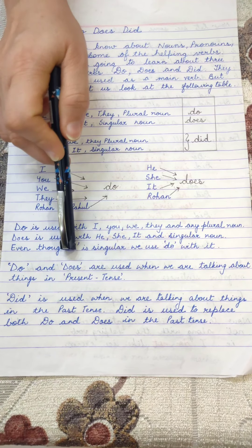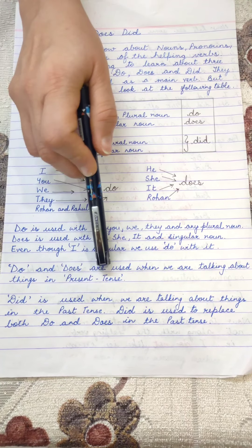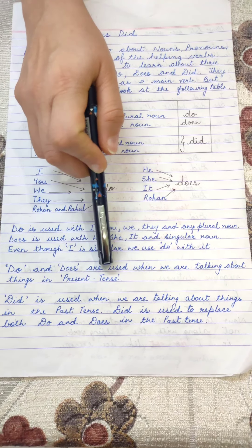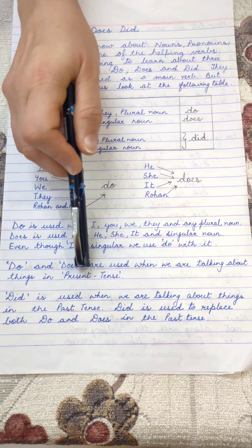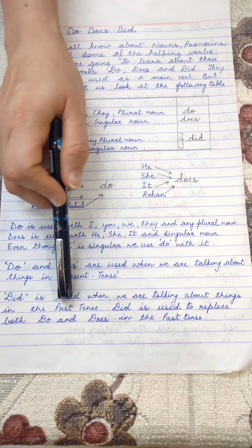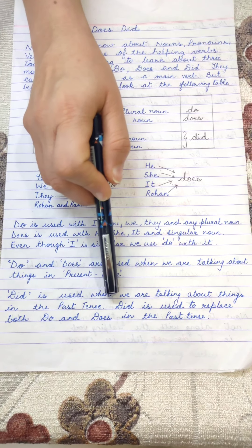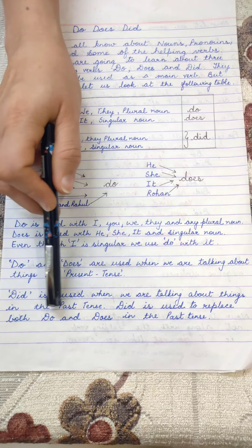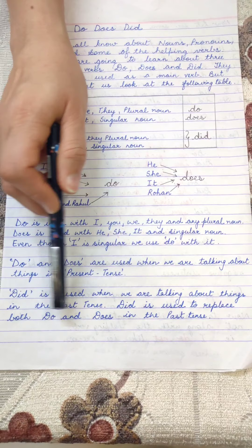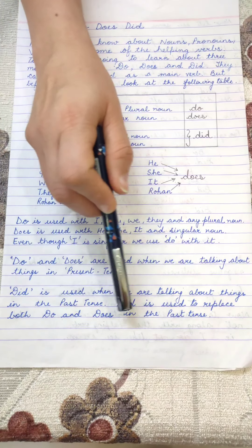Do and does are used when we are talking about things in the present tense, meaning the things which are going on right now. For example, ma'am is teaching you right now — that is present tense. Did is used when we are talking about things in the past tense, meaning the things which we had already done. Did is used to replace both do and does — for both do and does, one single past tense helping verb is used. Now let us see some examples which will make the concept of do, does and did more clear.